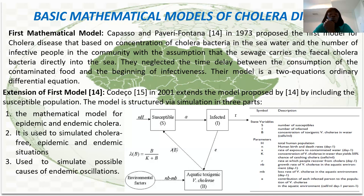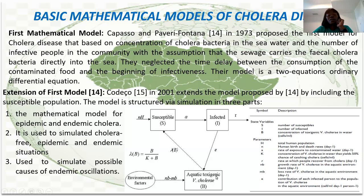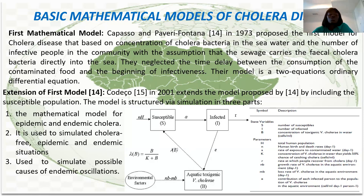In 2001, that work was extended by Codeco, who included a susceptible population — not just infected — so it became a susceptible population and infected bacteria compartment. In their work, they considered that the bacteria should have a carrying capacity in the environment, to determine whether the bacteria would persist. Their model examined epidemic and endemic cholera situations, simulating cholera-free equilibrium and also possible causes of endemic oscillations of cholera in an environment.